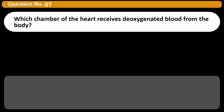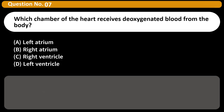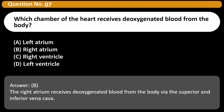Which chamber of the heart receives deoxygenated blood from the body? A) Left atrium, B) Right atrium, C) Right ventricle, D) Left ventricle. Answer: B. The right atrium receives deoxygenated blood from the body via the superior and inferior vena cava.